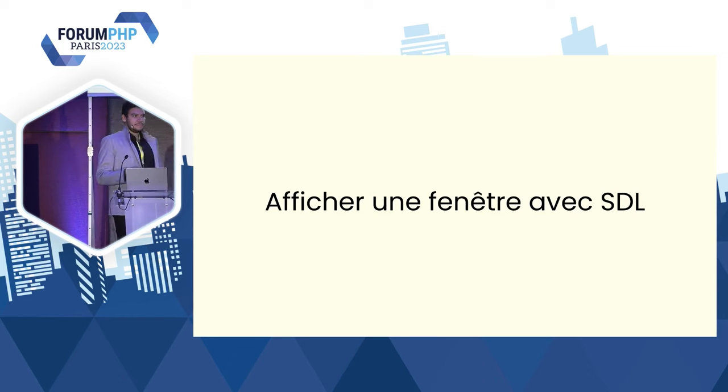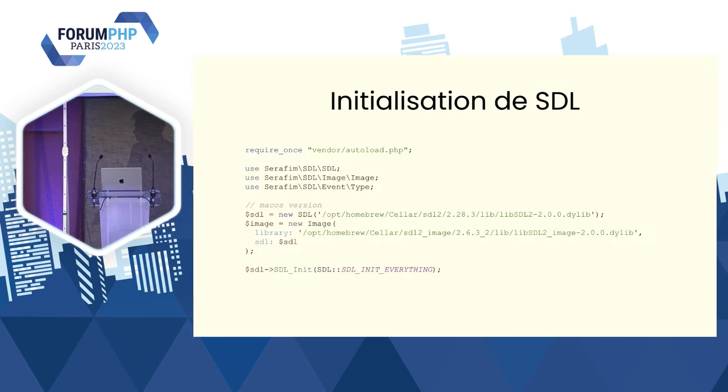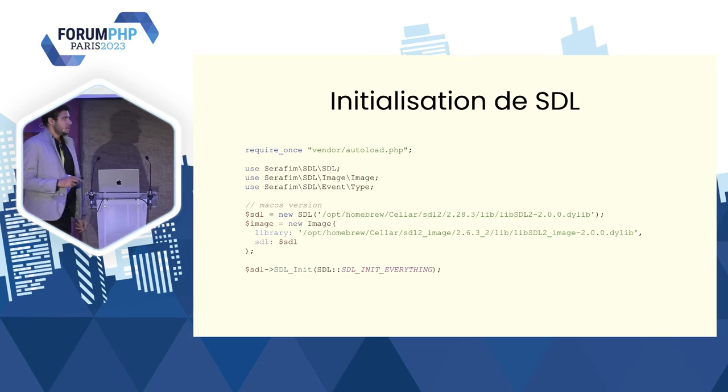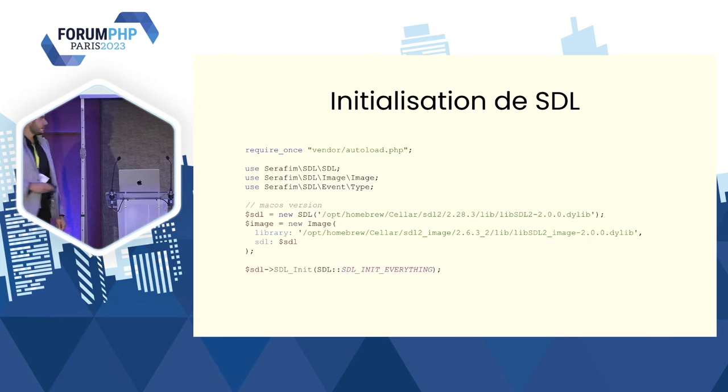Reprenons : on va afficher notre fenêtre avec SDL. J'ai choisi FFI. L'initialisation est assez simple avec la librairie de Seraphim : c'est juste `new SDL`, et on vient spécifier la librairie partagée. Sur Linux, c'est inutile de la préciser, car la librairie résout le .so automatiquement. Sur macOS, ce sont des .dylib. Il y a aussi une petite subtilité : on doit charger une deuxième partie de la lib — SDL_image — pour inclure des PNG dans notre application.